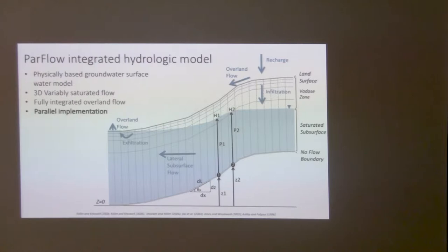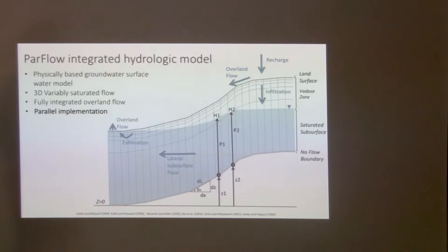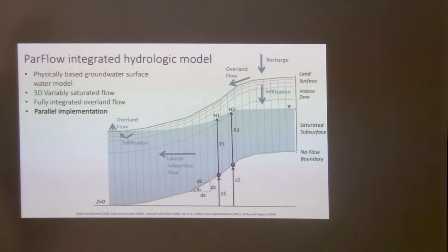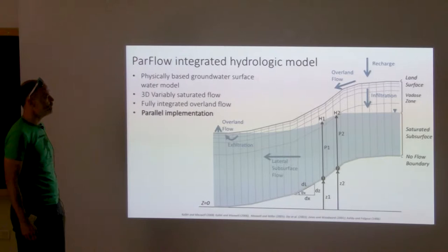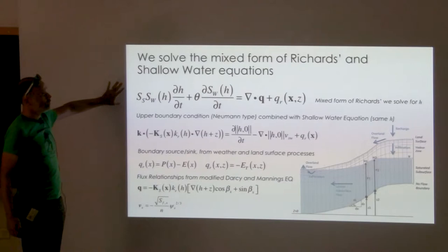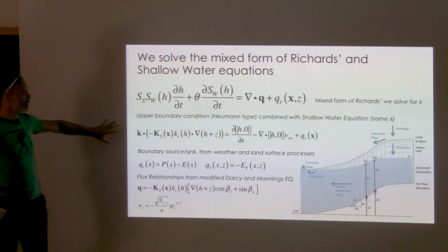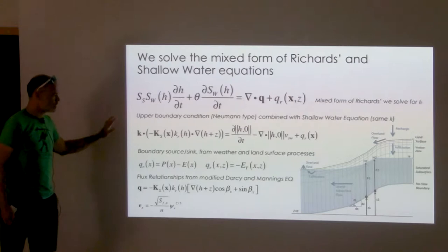So what is the PARFLOW model? It's a physically based integrated surface-subsurface model. If you're curious about the difference between integrated and coupled, I'm happy to discuss that. We solve 3D variable saturated flow, we have fully integrated overland flow, and a fully parallel implementation — parallel from the ground up. We can look at a depiction of the flow system and all the processes represented, similar to the classical Freeze blueprint paper. Mathematically, we solve the mixed form of Richards' equation, and we have a novel way that we combine in the Neumann-type boundary condition with the shallow water equations.